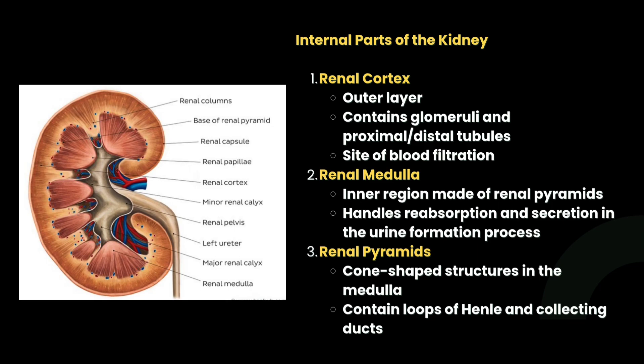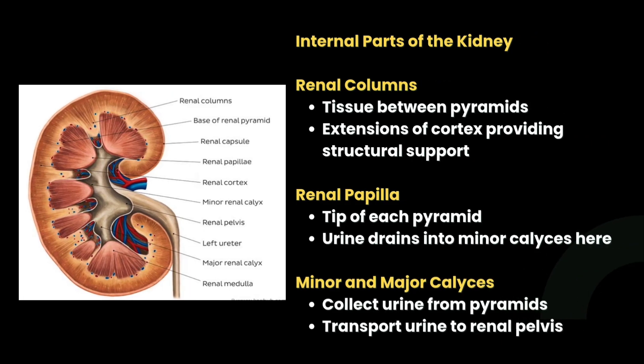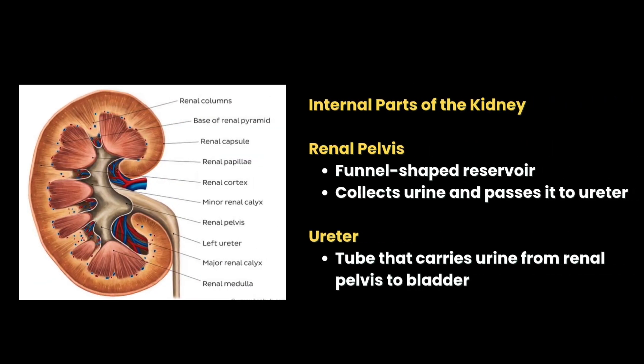The renal pyramid is a cone-shaped structure in the medulla. The renal column is the tissue between the pyramids — an extension of the cortex providing structural support. The renal papilla is the tip of each pyramid, where urine drains into the minor calyces. The minor and major calyces collect urine from the pyramids and transmit it to the renal pelvis. The renal pelvis is a funnel-shaped reservoir that collects urine and passes it to the ureter.